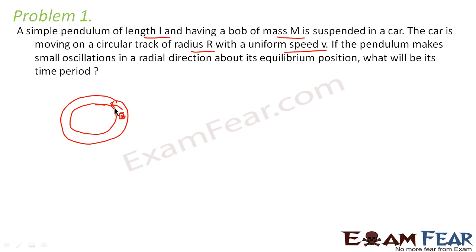Now if the car is moving in a circular track, the pendulum makes small oscillations in the radial direction — that is, towards the center of the circular path — about its equilibrium position. What will be its time period?